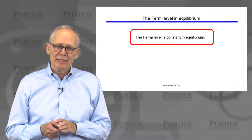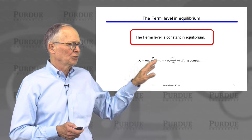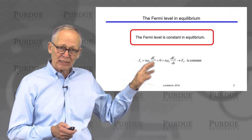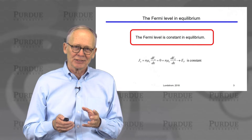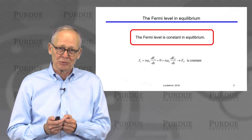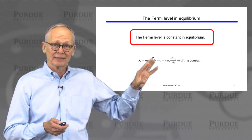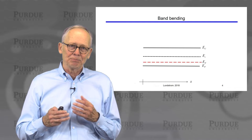In equilibrium the Fermi level is constant — it's independent of position. One way to see that is if you remember that we often write the current as proportional to the gradient of the quasi-Fermi level. In equilibrium the quasi-Fermi level is the Fermi level, so the current is the gradient of the Fermi level. But almost by definition the current is zero in equilibrium — nothing is happening. We can't extract energy out of a semiconductor device that is just sitting there in equilibrium. So in equilibrium the current is zero, and the current equation then implies that the Fermi level must be independent of position.